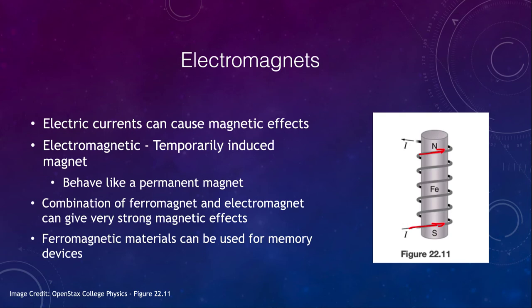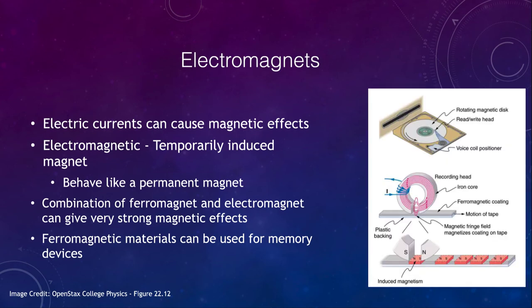Ferromagnetic materials are often used in memory devices. In a hard drive, a magnetic disc spins around and a recording head creates little bits of induced magnetism on that disc, which can then be read back by the computer and used as storage devices — a way of storing information on a computer.